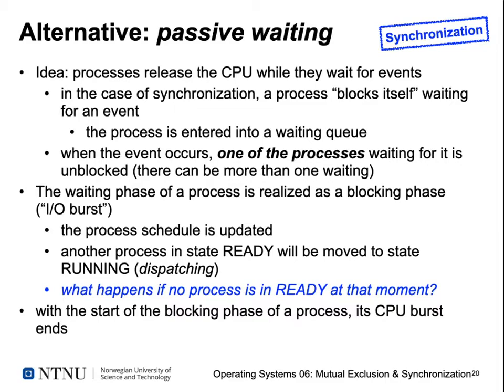We need to enter this process into a waiting queue to indicate that it has blocked itself and is waiting for a certain critical section to become free. Otherwise we'd have to go through all processes to check if any were waiting, which is very inefficient as we've seen in the bakery algorithm. When the event occurs, multiple processes might be waiting, so only one should be unblocked to enter the critical section. If we unblocked multiple processes, they'd all try to enter, causing the same problem as before. We need this waiting queue to create order for critical section access.